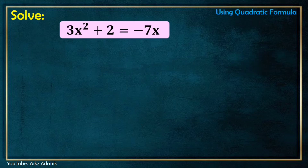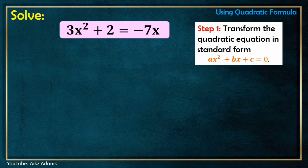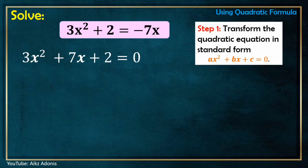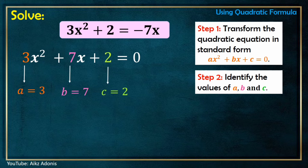Another example: let's solve 3x squared plus 2 equals negative 7x. Before we start solving it, step 1 — let's rewrite it first in standard form. The standard form is 3x squared plus 7x plus 2 equals 0. We just transpose negative 7x to the left, that's why we have 7x. Step 2: the values of a, b, and c — a is 3, b is 7, and c is 2.